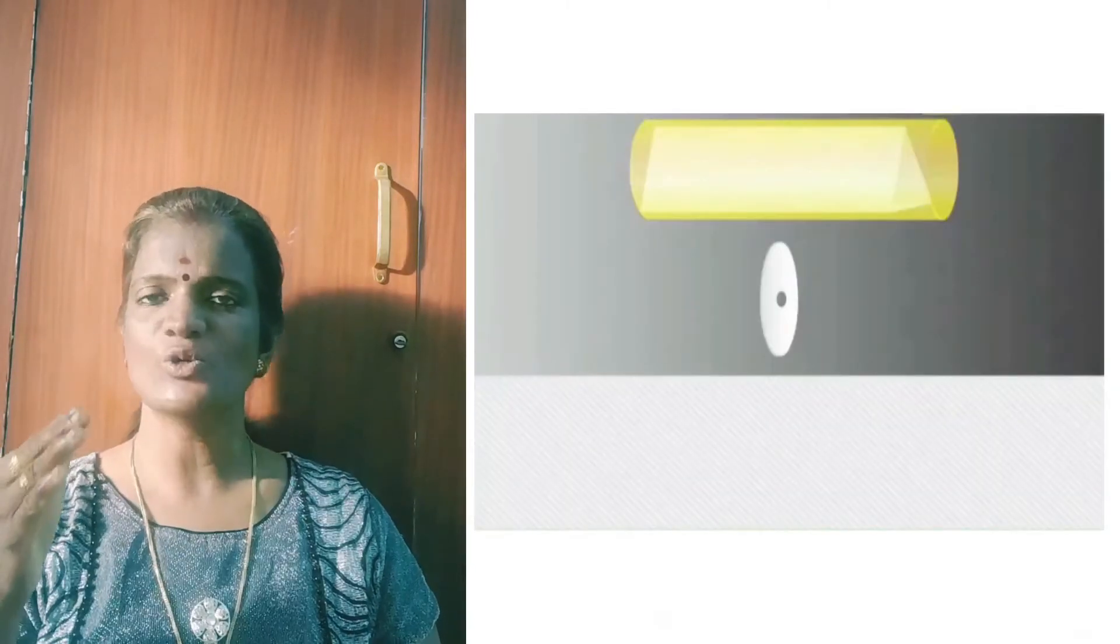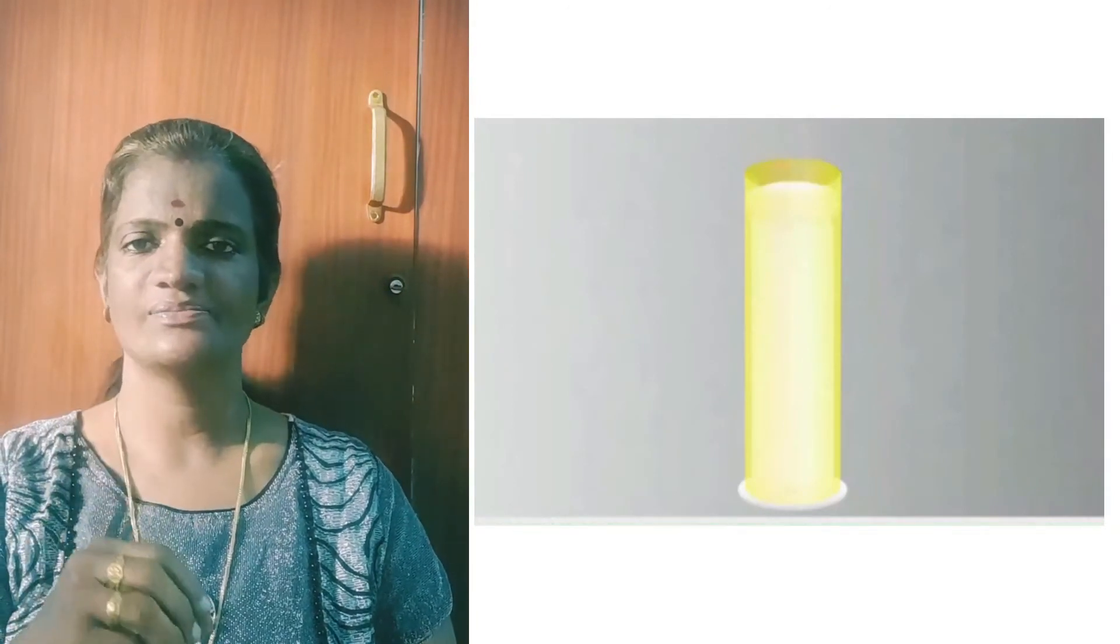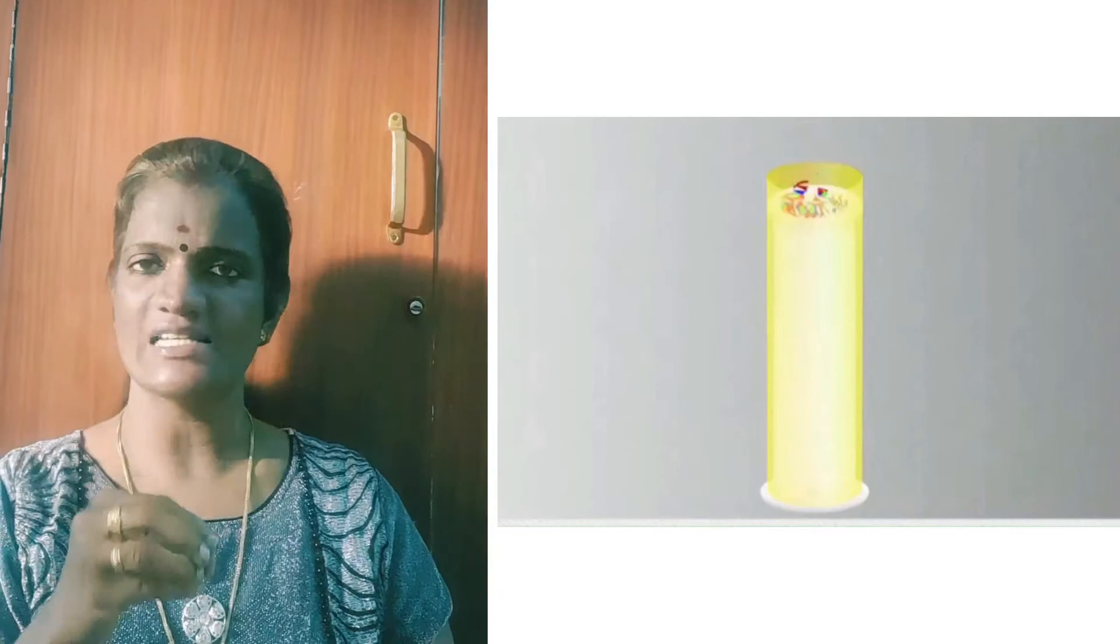Then close one end of this tube by a cardboard disc with a hole in the center through which we can see. At the other end of the tube, fix a plain circular glass plate touching the mirrors, and place on this glass plate several broken pieces of colored bangles or colored glass pieces.